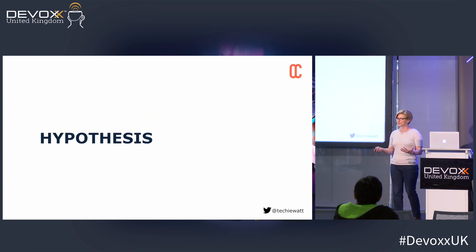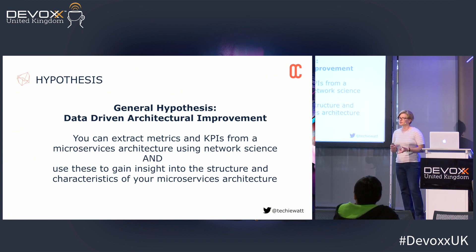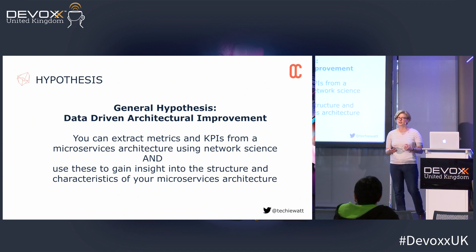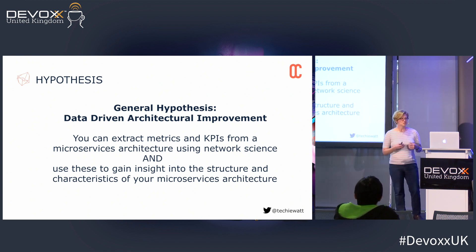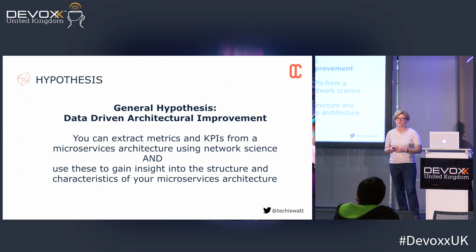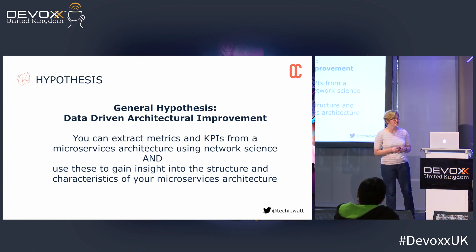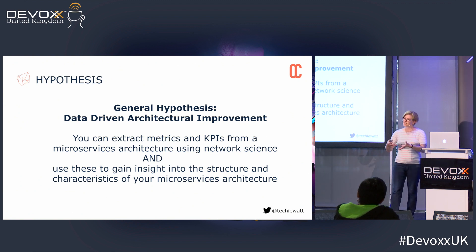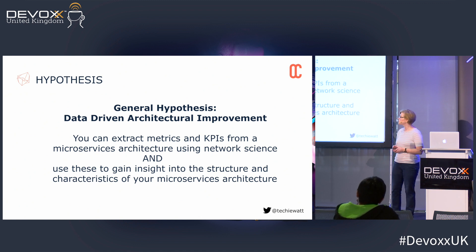So the first thing is the hypothesis. I think we really should be able to get to the point where we can do more data-driven architectural improvement. Specifically, I think it's important to try and extract some key metrics and KPIs from your microservice architectures, and using network science is one way that we can do that — and then use that to gain insight into the system and improve the characteristics of our architecture.